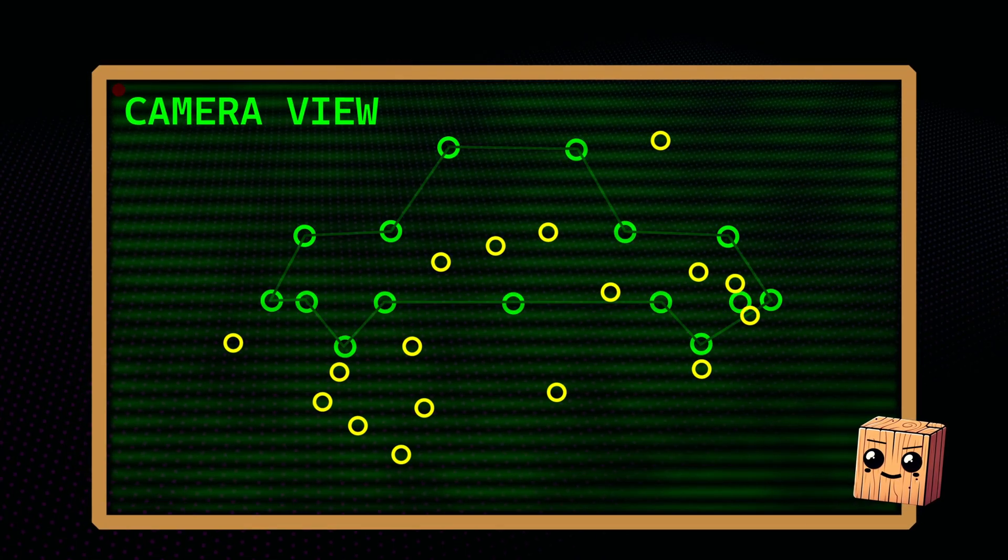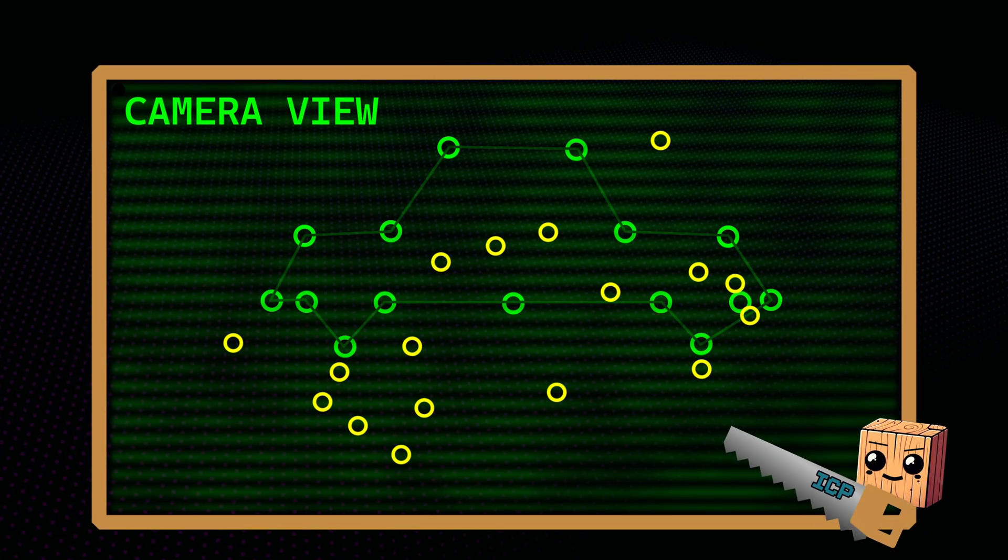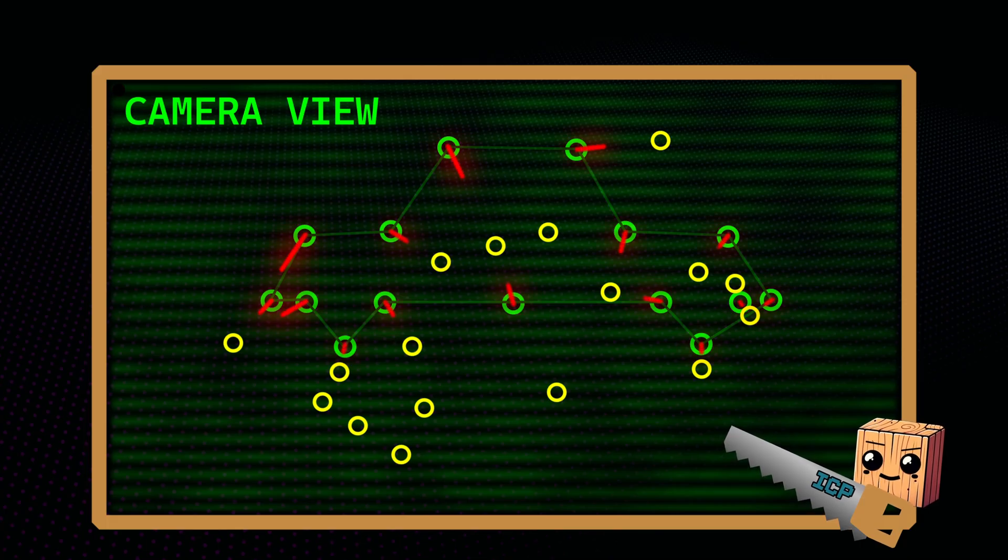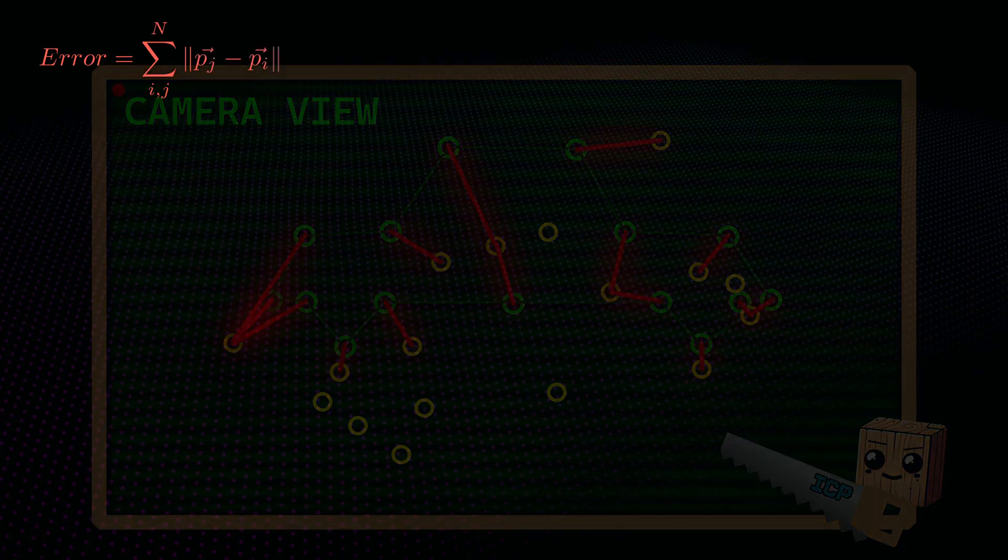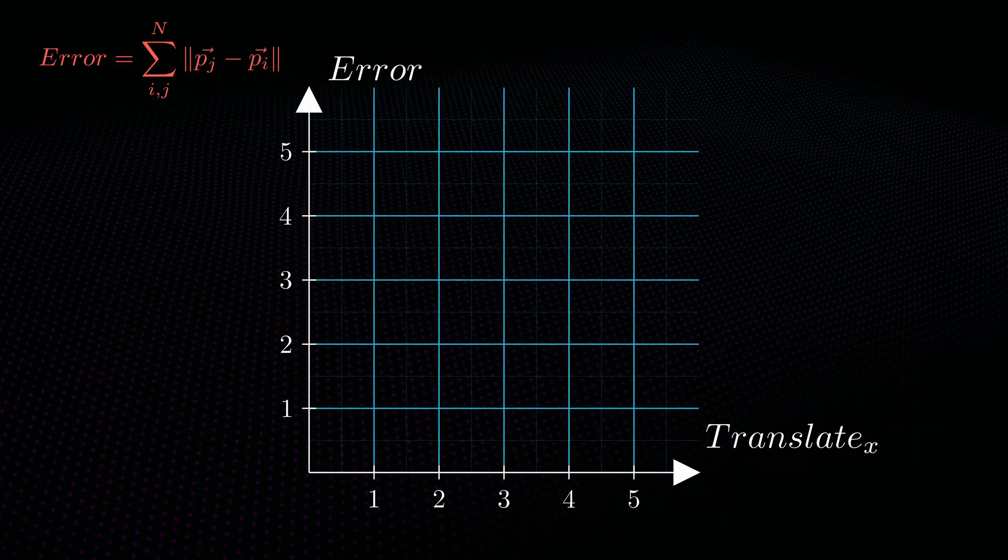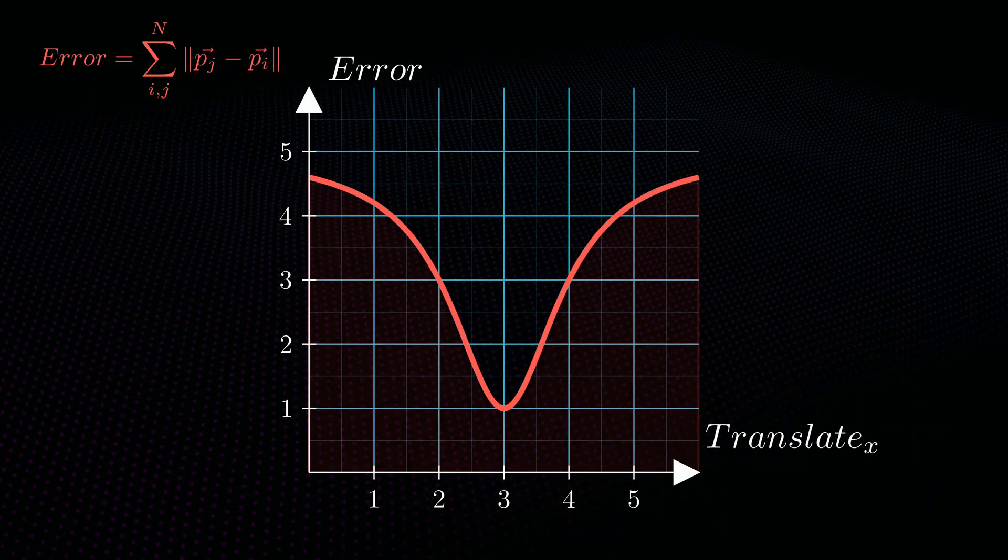ICP throws out a guess, a random translation and rotation for example, then it finds the closest points between the guess and the actual points. If we sum these distances up, we get an error score. Every possible guess has an error score, which we can imagine as a loss surface.